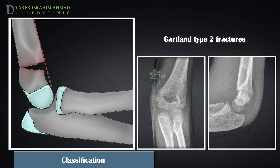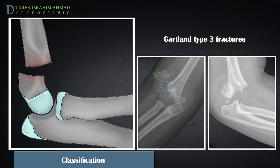Gartland Type 2 fracture refers to a displaced fracture with an intact posterior periosteum. In contrast to Type 1, the anterior humeral line is displaced anteriorly, either hitting the anterior third of the capitellum or missing it entirely, indicating posterior displacement of the distal humeral fragment. Gartland Type 3 fracture is a displaced fracture with no continuity between the proximal and distal fracture fragments; posteromedial displacement is the most common pattern, and posterolateral is less common.